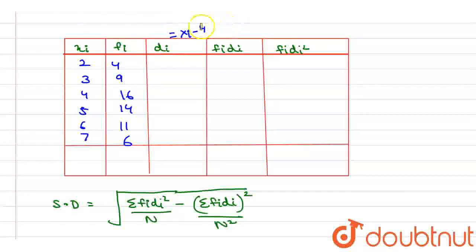Let's suppose d_i equals x_i minus 4. We can assume this number anything in this range. So from here we can say that this is 2 minus 4 equals minus 2, 3 minus 4 equals minus 1, 4 minus 4 equals 0, 5 minus 4 equals 1, 6 minus 4 equals 2, and 7 minus 4 equals 3.